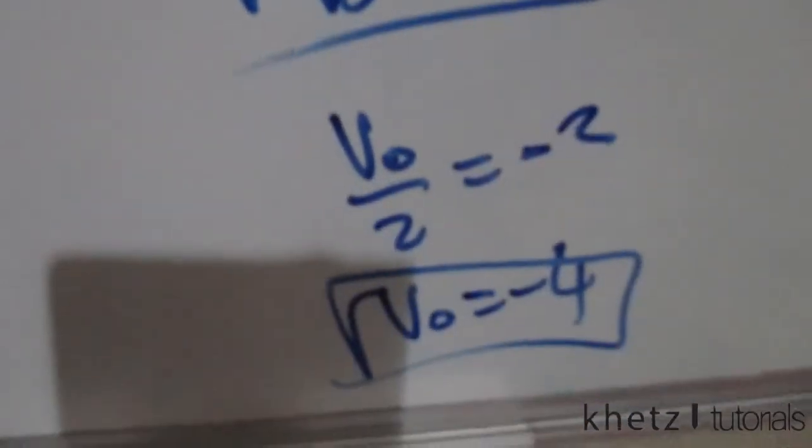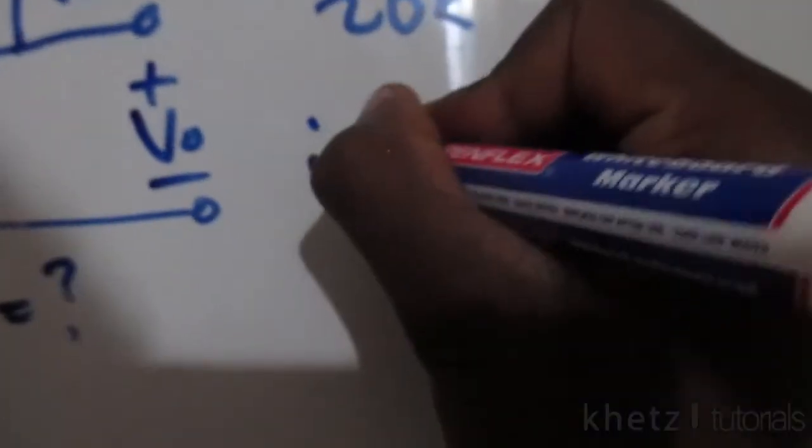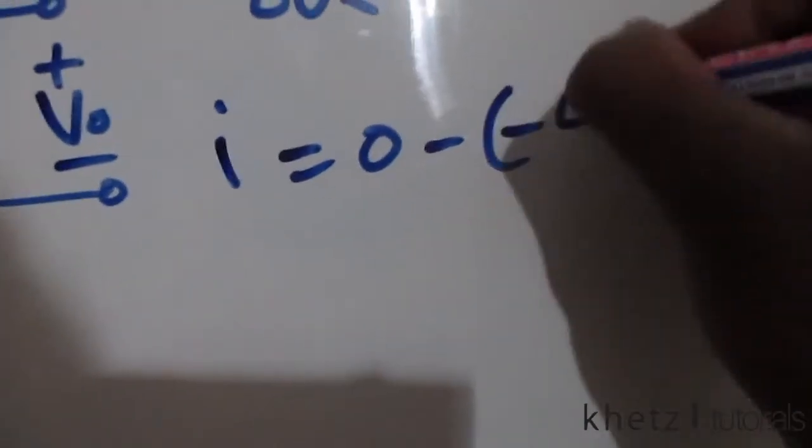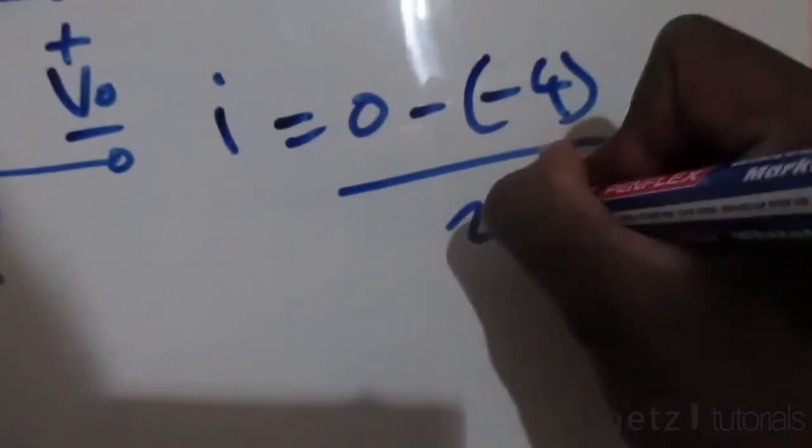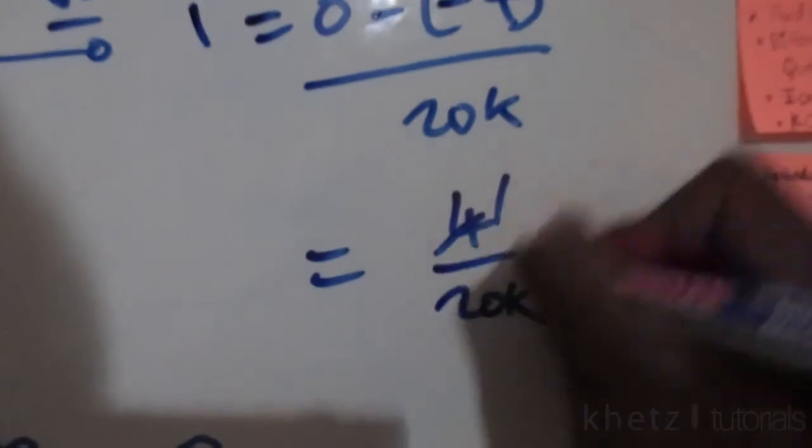All right, so now plugging in this negative 4 which we just found, we're gonna have i is equal to zero subtract minus 4 divided by 20k, which is the same as 4 divided by 20k.